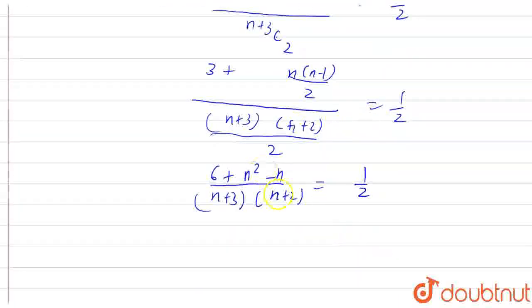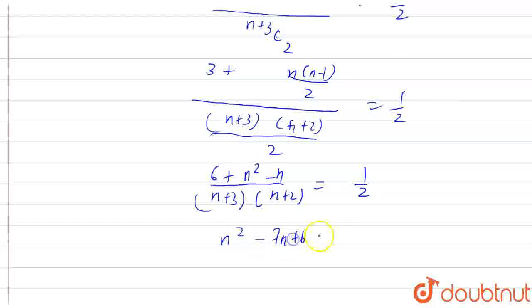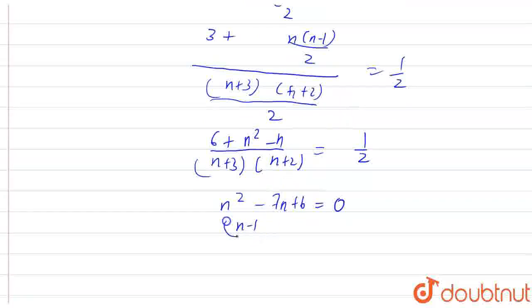Now on solving this equation, we will get n squared minus 7n plus 6 equals 0. From here we can conclude that n minus 1 into n minus 6 equals 0.